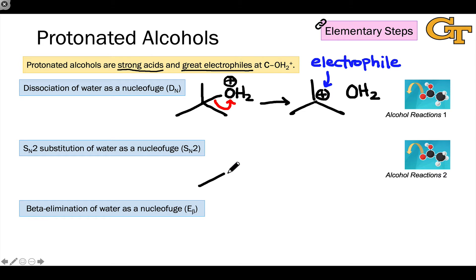Even when a stable carbocation can't form, we see protonated alcohols acting in SN2 steps. Again, thanks to the good leaving group ability of this OH2 plus group.